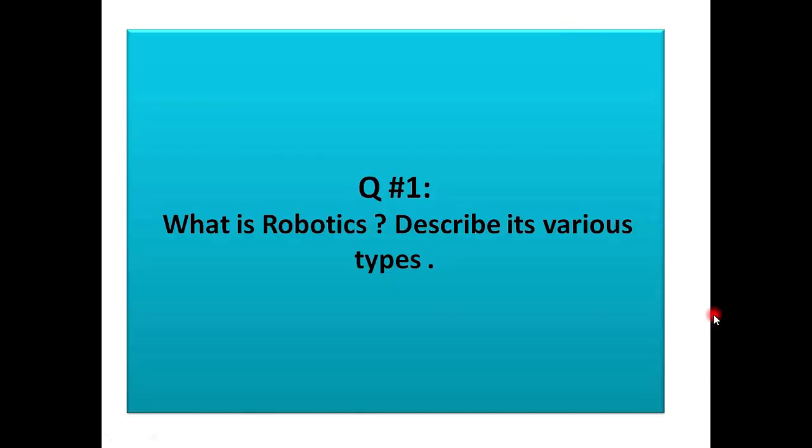Let's start our exercise questions and answers. All the questions and answers are solved here in a proper way. Question number one is: What is robotics? Describe its various types. Here is the term robotics. Keep in your mind there is a difference between robotics and robots. Robot is a machine, simple a machine, and robotics is function of robots in all fields.